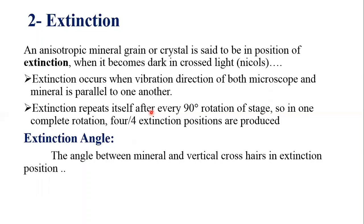Extinction is the second cross light property of minerals. An anisotropic mineral grain or crystal is said to be in a position of extinction when it becomes dark in cross light, or in crossed nicols. When a mineral becomes dark in cross light, it is said to be in a position of extinction.